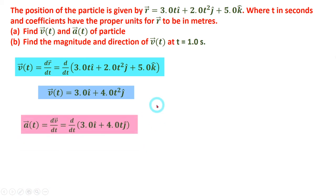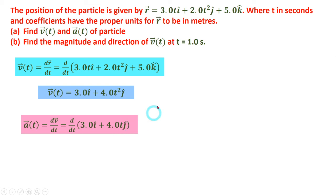Next, a(t) is found by differentiating v(t). The term 3.0 î is a constant, so its derivative is 0. Differentiating 4.0t gives 4.0. Therefore a(t) equals 4.0 ĵ m/s², which is a constant acceleration.